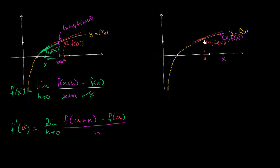And so what's the slope of the secant line between these two points? It would be change in the vertical, which would be f of x minus f of a, over change in the horizontal, over x minus a.